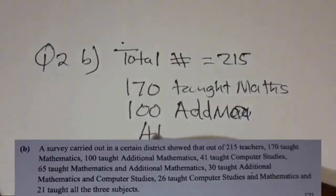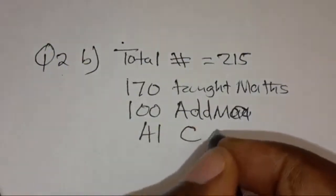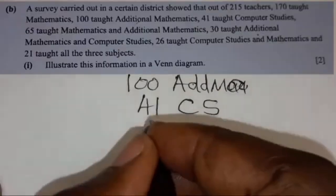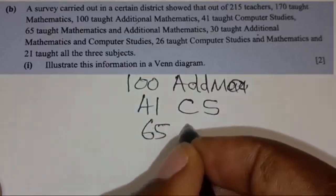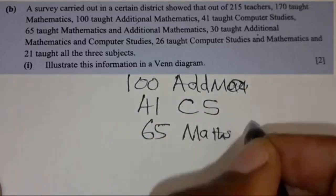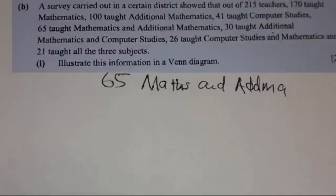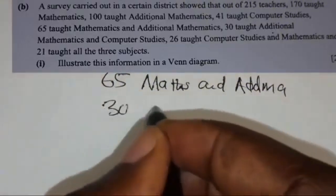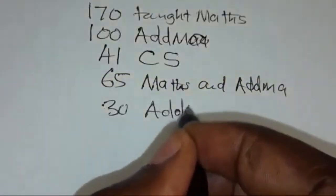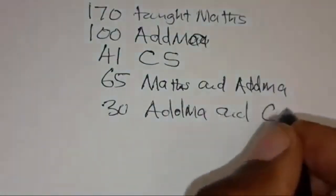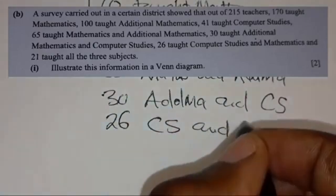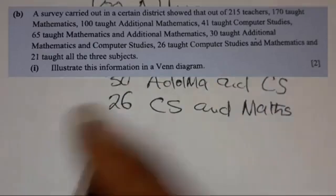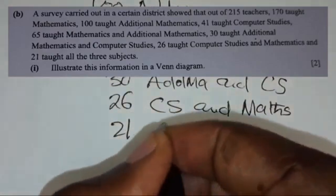Then 41 taught computer science (CS). 65 taught mathematics and ADMA. 30 taught additional mathematics and computer science. 26 taught computer science and maths. And 21 taught all the subjects.